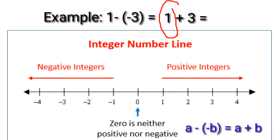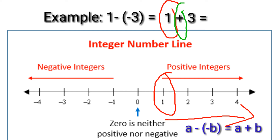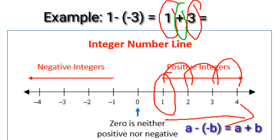Our starting point on the number line is positive 1. Since we have plus 3, we're going to move to the right — 3 movements to the right: 1, 2, 3. We landed on positive 4. Therefore, 1 minus negative 3 equals positive 4.